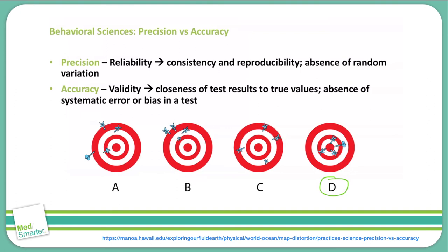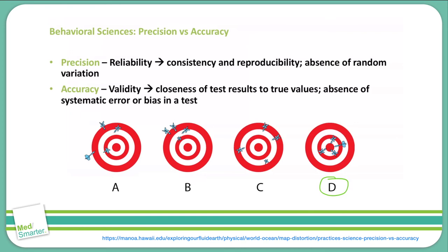We want studies that are both precise and accurate. Some studies may need to be more reliable so that we can reproduce them, while others may need to be more valid — closest to the true values — even if the results are scattered a little bit.